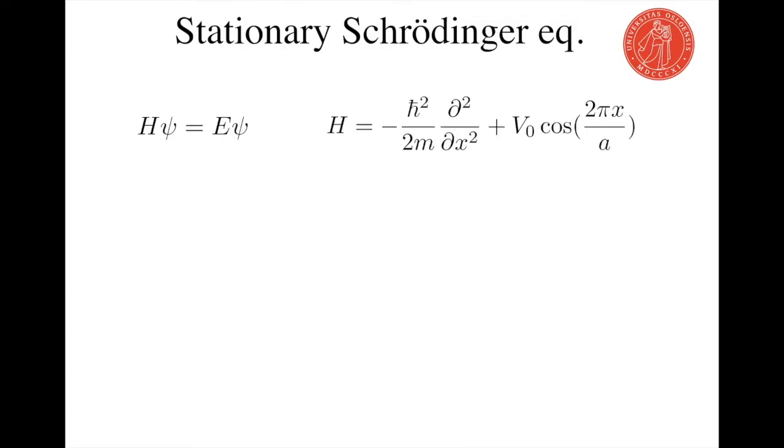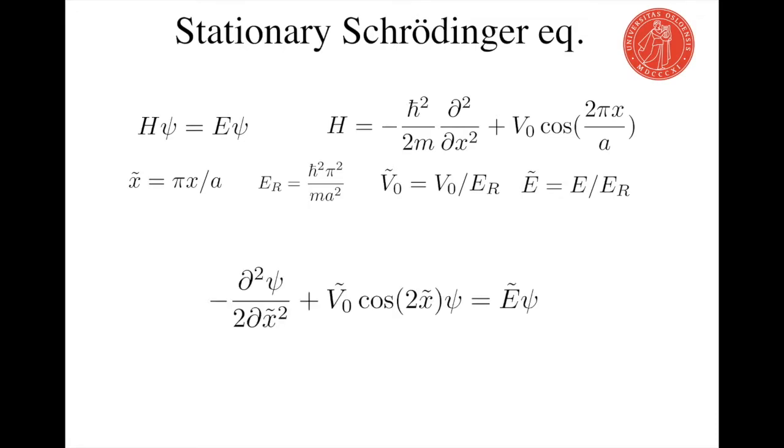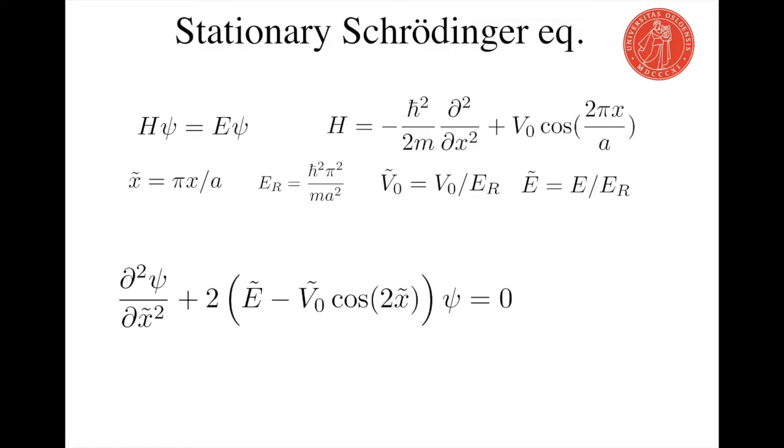The Hamiltonian has a kinetic part as well as another part describing the cosine potential. Let's use dimensionless variables, then the Schrödinger equation can be recast as the following differential equation, which actually happens to be called the Mathieu equation.